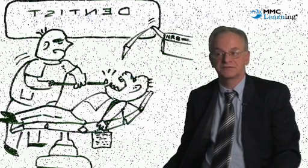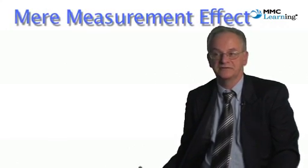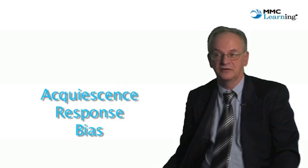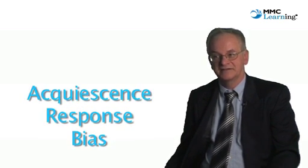There are several names for such problems such as the mere measurement effect or acquiescence response bias and satisficing.